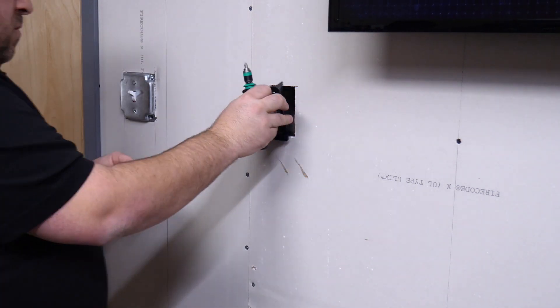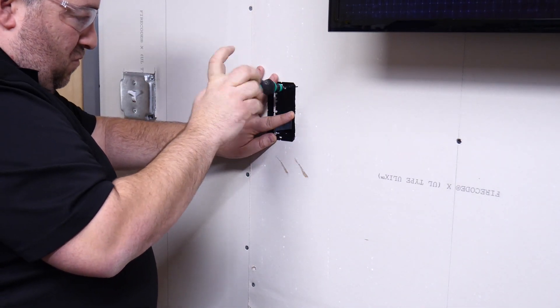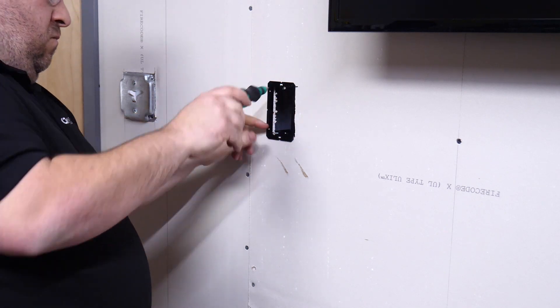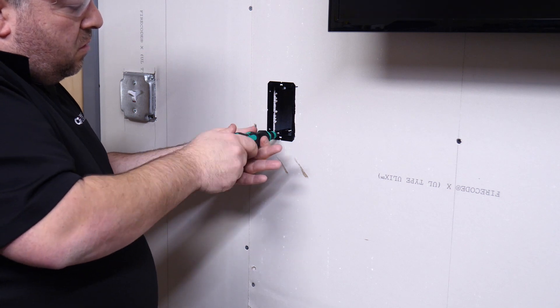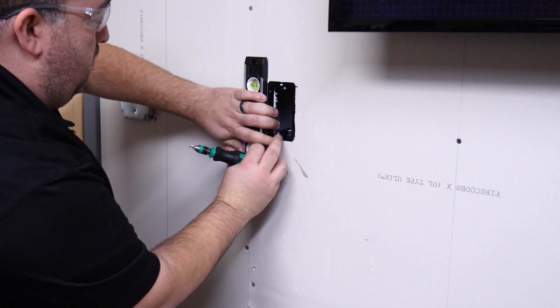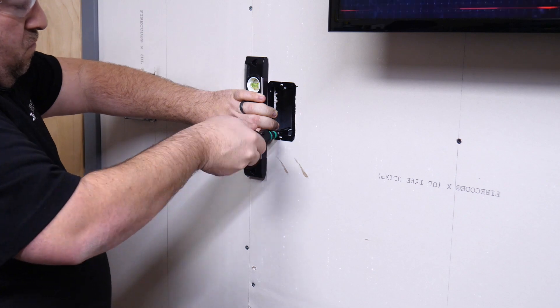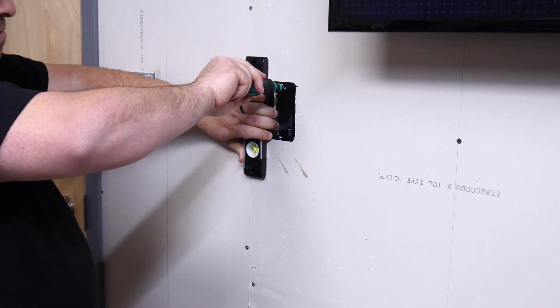Now that we have our hole cut out, all we need to do is put in our frame, check our level, and then tighten the screws down. These screws are going to grab to the back of the drywall and pull everything tight. From there, all we need to do is pull our cable, connect up our plate, and we're good to go.